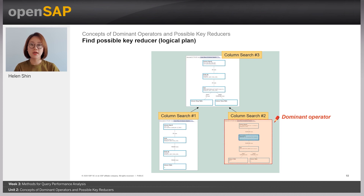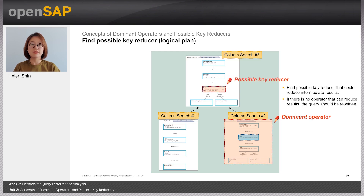Now let's find out the possible key reducer. We defined the possible key reducers as an ancestor operator of the dominant operator that could reduce the result from the dominant operator. Therefore, the possible key reducer in this example can be this join, since the generated records are extremely reduced after this join.